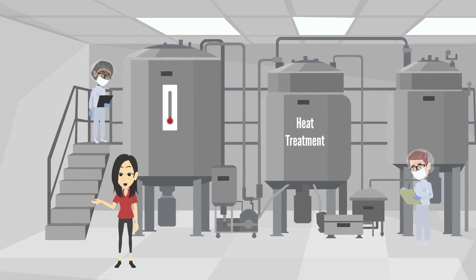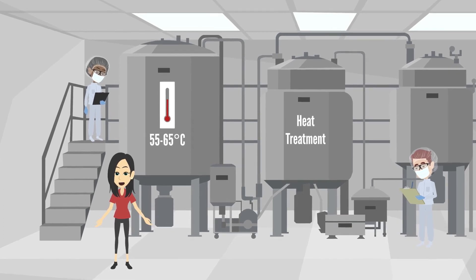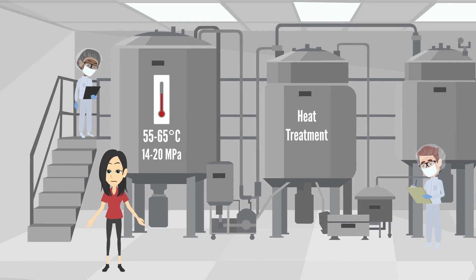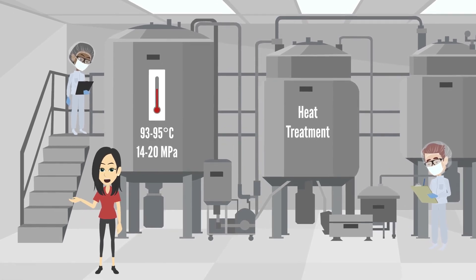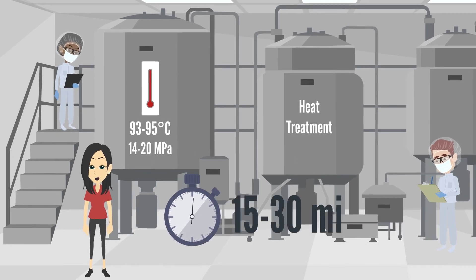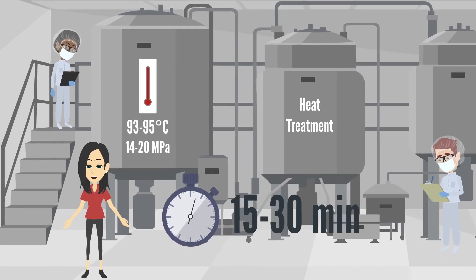It is heated first to 55 to 65 degrees celsius and 14 to 20 mpa to homogenize the milk and then is heated to 93 to 95 degrees celsius and held for 15 to 30 minutes. This improves the milk structure and sanitizes the milk.